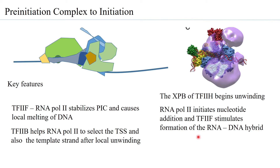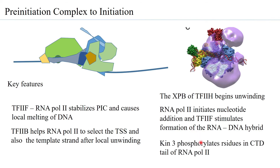TF2F plays a very important role in formation of the phosphodiester bond and stabilizes the RNA-DNA hybrid formed. Kinase-3 of TF2H is phosphorylating residues in the CTD tail of RNA polymerase 2, readying it to carry out RNA processing.